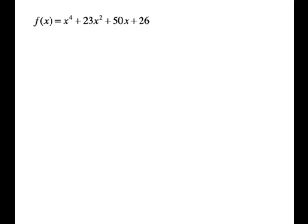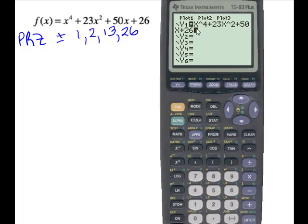We have one more problem to look at, and this one has some interesting things happen in it. So, let's go ahead and start. And so, first our possible rational zeros are plus or minus 1, 2, 13, and 26. That would be over factors of the leading coefficient, which is 1. So, those would all be over 1. Let's go ahead and pull it up on our calculator. So, I have entered that for you. x to the 4th plus 23x squared plus 50x plus 26. And we will tell it graph.